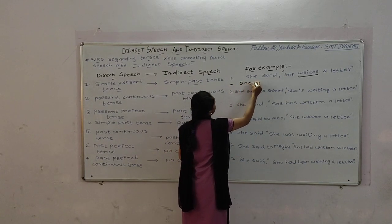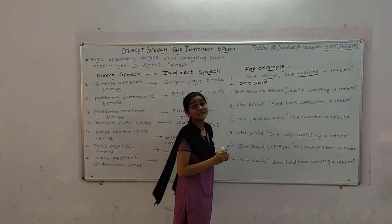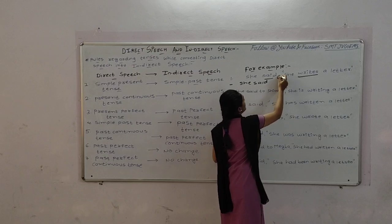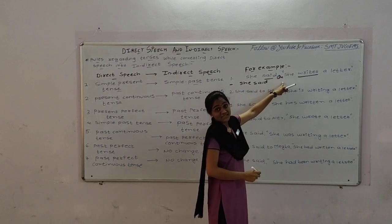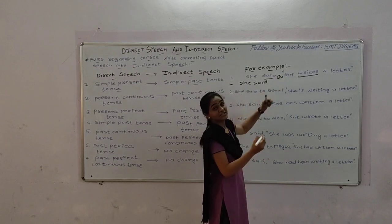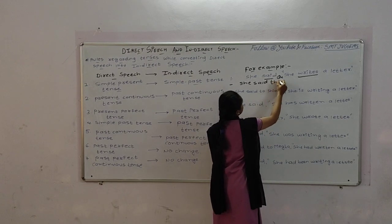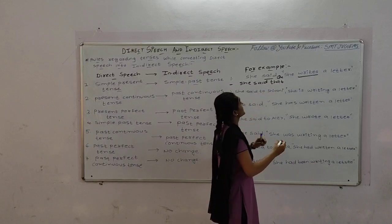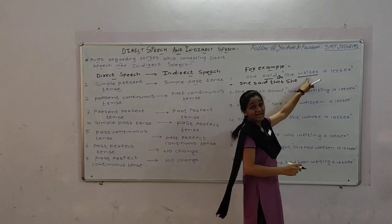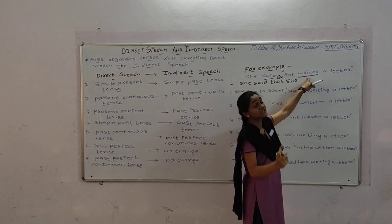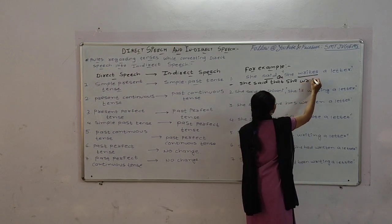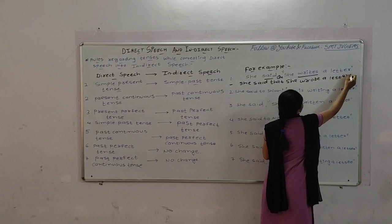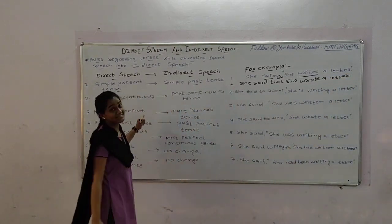She said — the reporting verb remains the same, as we learned in the previous video. The comma will be cancelled in indirect speech and will change into 'that'. So we write: she said that she wrote a letter. The verb 'writes' is in present form, but we convert it into past form — 'wrote'. Full stop. Let's move towards our second tense.